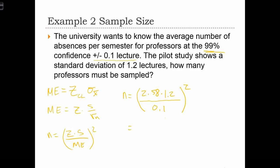Using the calculator, this equals 2.58 times 1.2, divided by 0.1. That equals 3.096 over 0.1, all squared, which equals 30.96 squared, which equals 958.5.